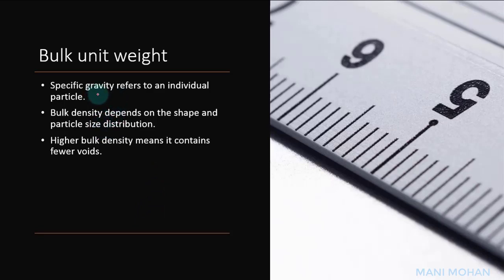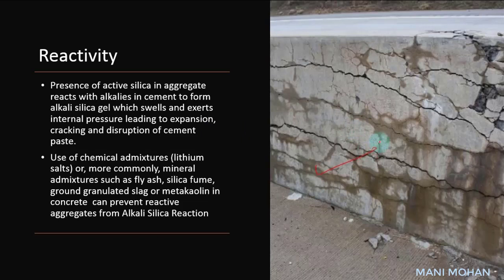Specific gravity refers to an individual particle; however, when aggregate is used for concrete, it contains voids. It is not possible to pack aggregate so that it contains no voids. Therefore, bulk density depends on the shape and particle size distribution. Using well-graded aggregate will yield fewer voids, meaning bulk density will be higher.